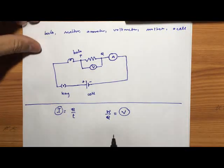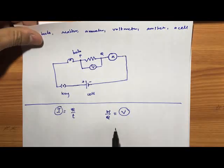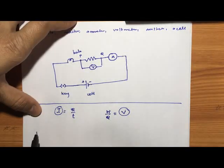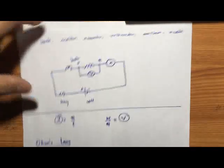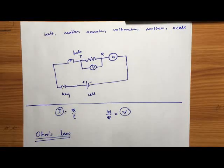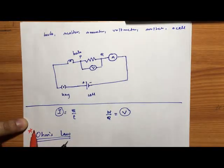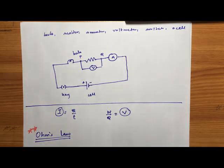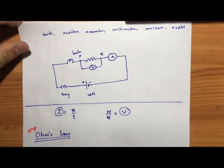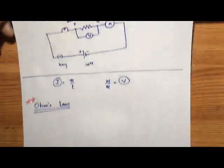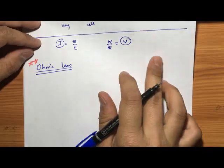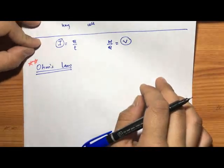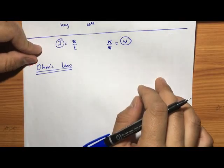The direct relationship between current I and potential difference V is given by Ohm's law. This topic is very important from both an exam point of view and a conceptual point of view. Based on this topic we will solve a lot of numerical problems, which are also very important from an exam point of view.